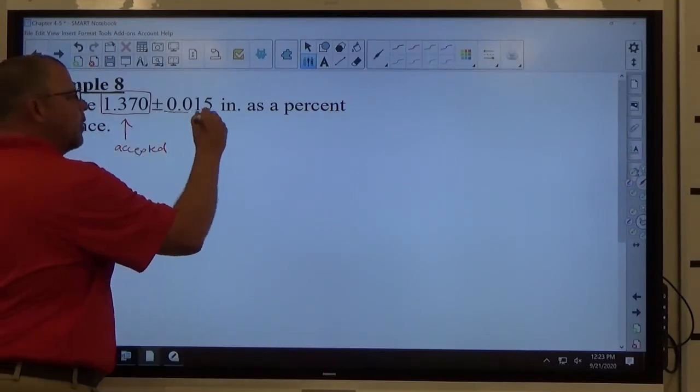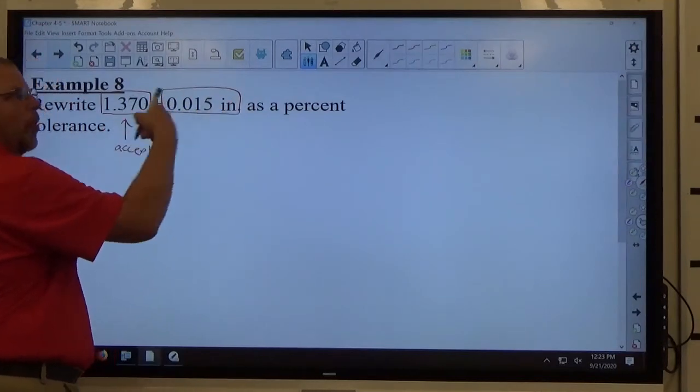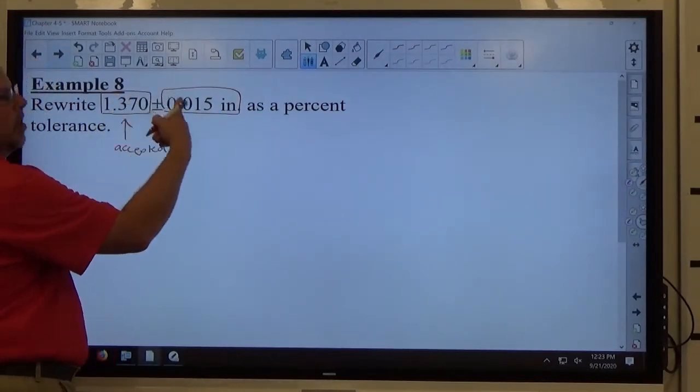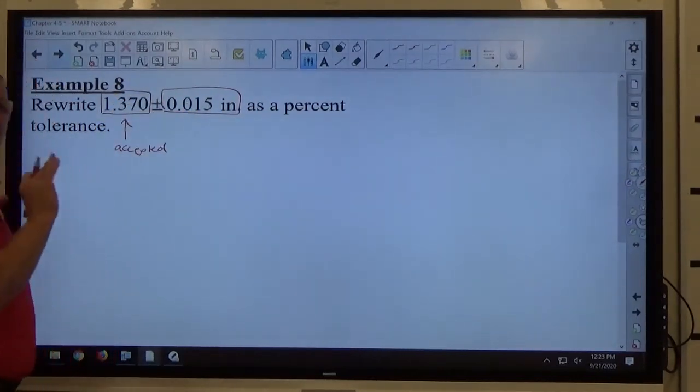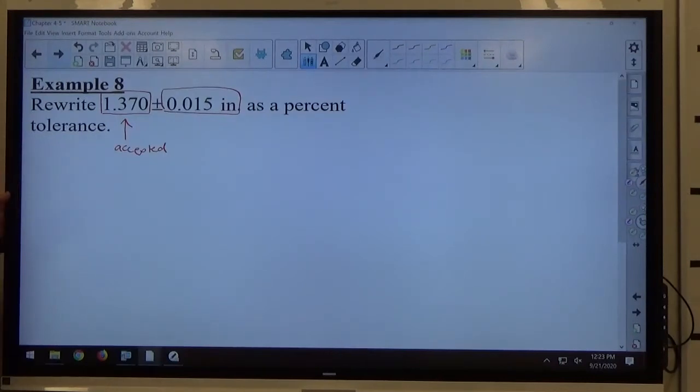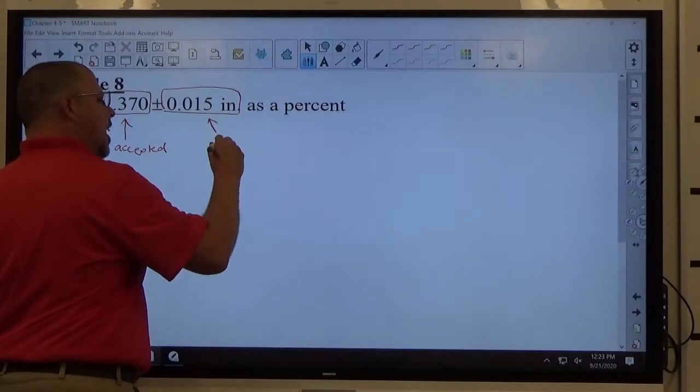This number represents—both are in inches, 1.370 inches plus or minus 0.015 inches. They only put the inches at the end of the entire expression, but the number after the plus-minus represents the allowed error.